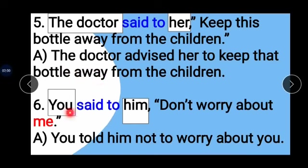Example 6: 'You said to him: Do not worry about me.' You is our subject, him is our object. 'Said to' changes to 'told'. Answer: You told him not to worry about you.